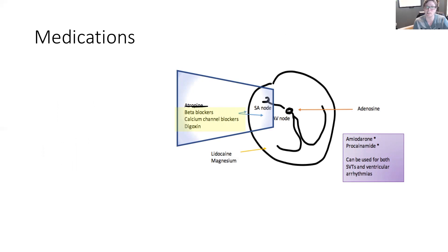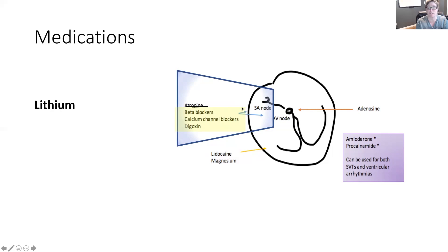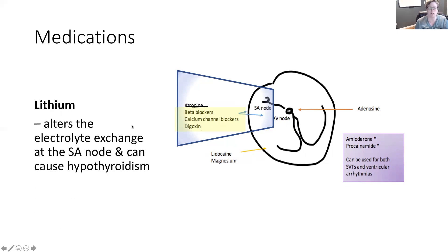There are medications that can also cause a slow heart rate. Our beta blockers, calcium channel blockers, and digoxin will all influence the movement of electrolytes and can slow the conduction rate between the SA node and AV node — particularly focused up in the right and left atrium. Lithium, on the other hand, is going to alter the exchange at the SA node, and it can actually cause hypothyroidism, which is another cause of sinus bradycardia. So when we have patients on lithium, we need to be watching them for signs and symptoms of hypothyroidism.